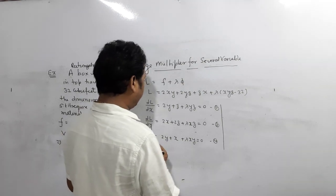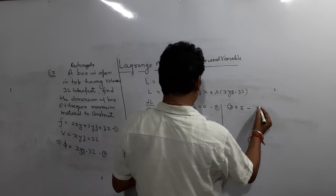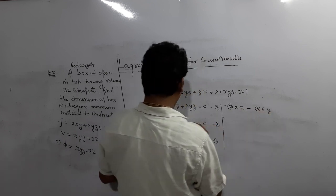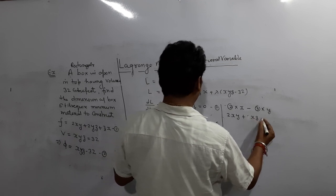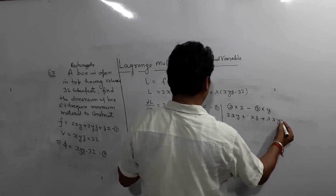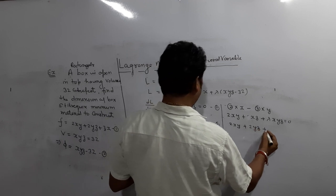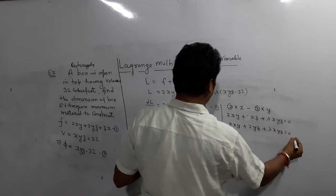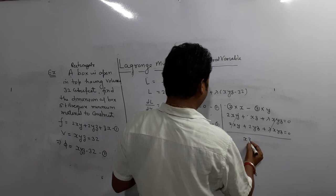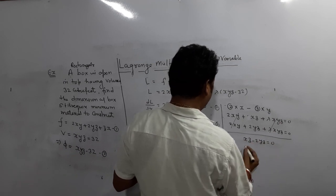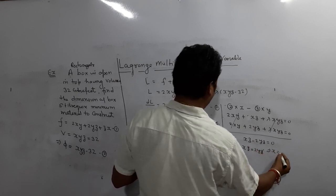Now solve these three equations. Multiplying equation 1 by x and equation 2 by y, then subtracting: the lambda terms cancel and we get xz - 2yz = 0, so xz = 2yz. Cancelling z, we get x = 2y.